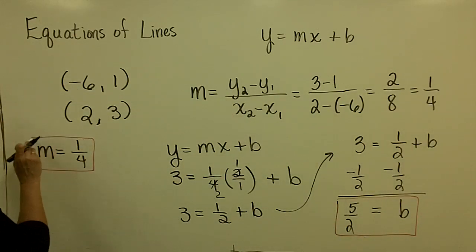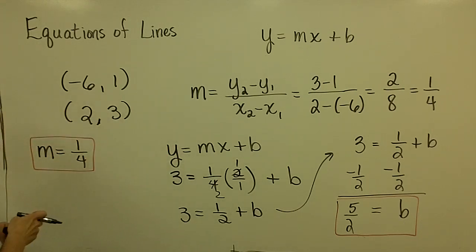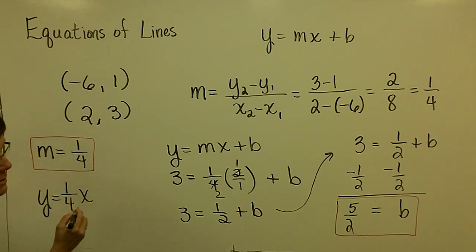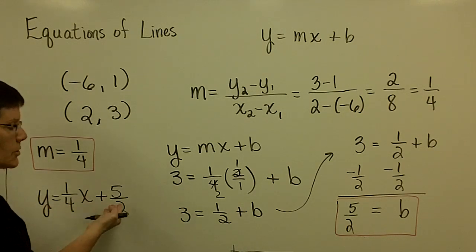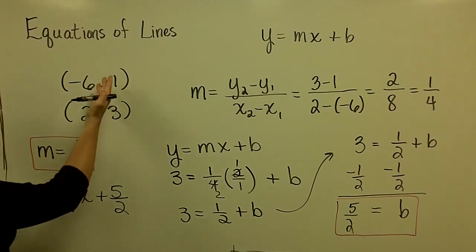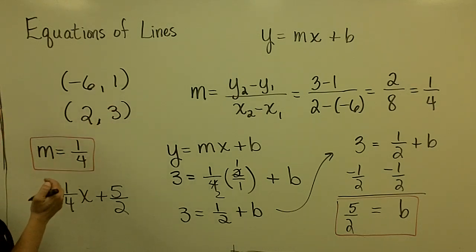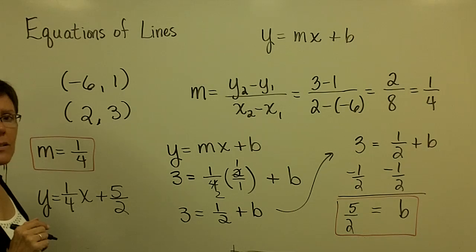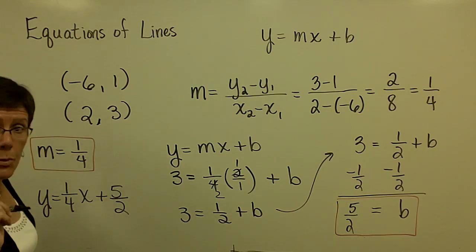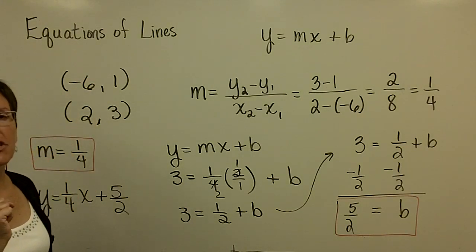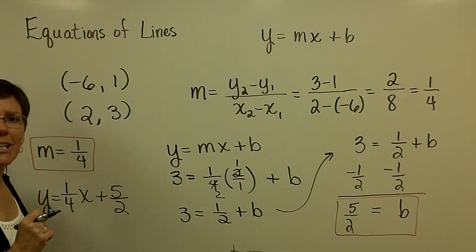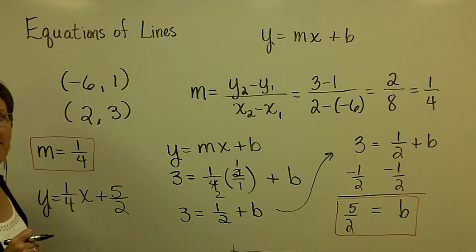I have a slope that I calculated from the two ordered pairs. And for m and for b, I can write the equation y equals 1 fourth times x plus 5 halves, my b value. And I have a linear equation whose slope is represented by the slope between these two ordered pairs. And that goes through both of those points as well. You could graph it to check it. It's a really good thing to do. Please, whenever you see two ordered pairs, think slope. I must have to do that first. Once I have the slope and an ordered pair, I can go anywhere with that and write the equation.